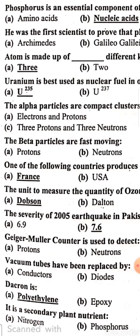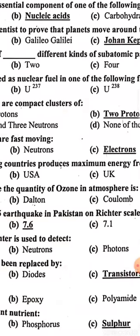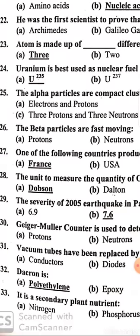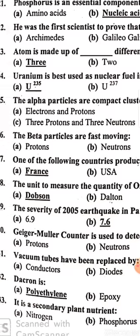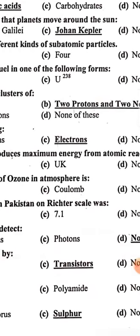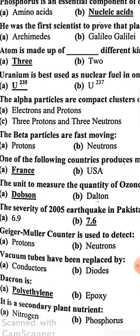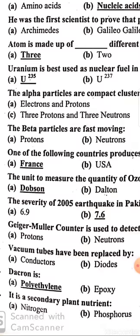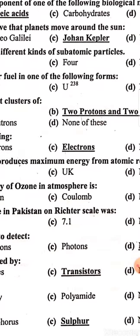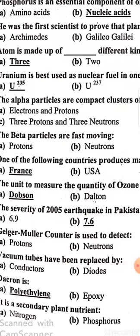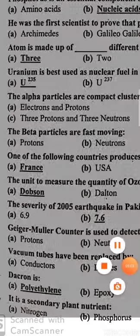Uranium is best used as nuclear fuel in the form U-235. Alpha particles are a compact cluster of two protons and two neutrons. Beta particles are fast-moving electrons.